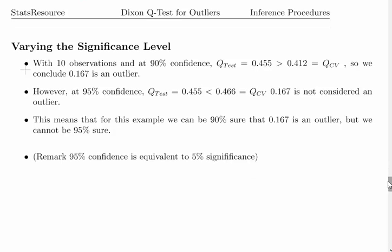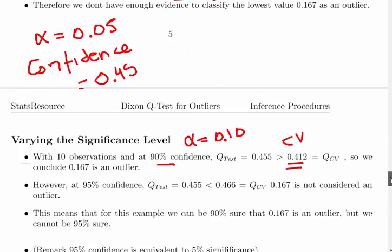What we could do is vary it a little bit. If we had 90% confidence, the critical value there would be 0.412, and at 90% confidence, which is an alpha level of 0.10, we would reject the null hypothesis.